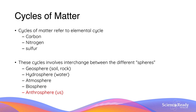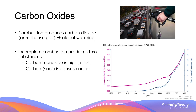These cycles have interchanges which happen in different spheres. We have the geosphere, which is soil and rock; the hydrosphere, which is water; the atmosphere; the biosphere; and finally the anthrosphere, which refers to us.